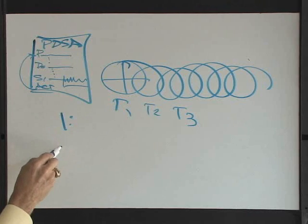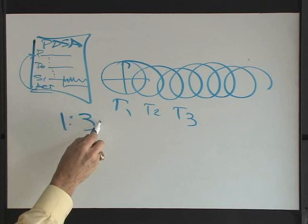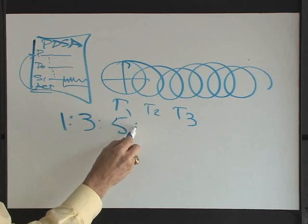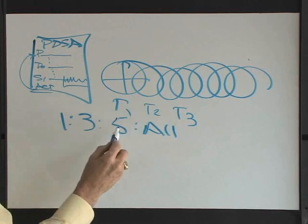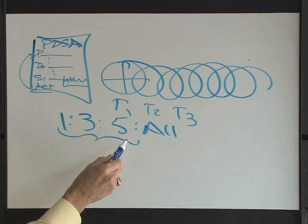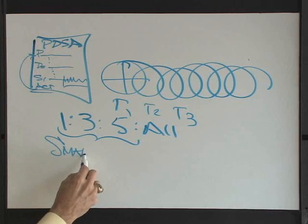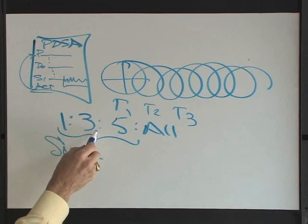And so we're going to link the PDSAs starting out in small tests. You're going to start with one patient on one day, possibly. Then you might move to three patients, then to five patients, and eventually you can apply it to all, but it requires testing under a variety of conditions. So we start small, with small tests of change, and then we start testing them under different conditions.